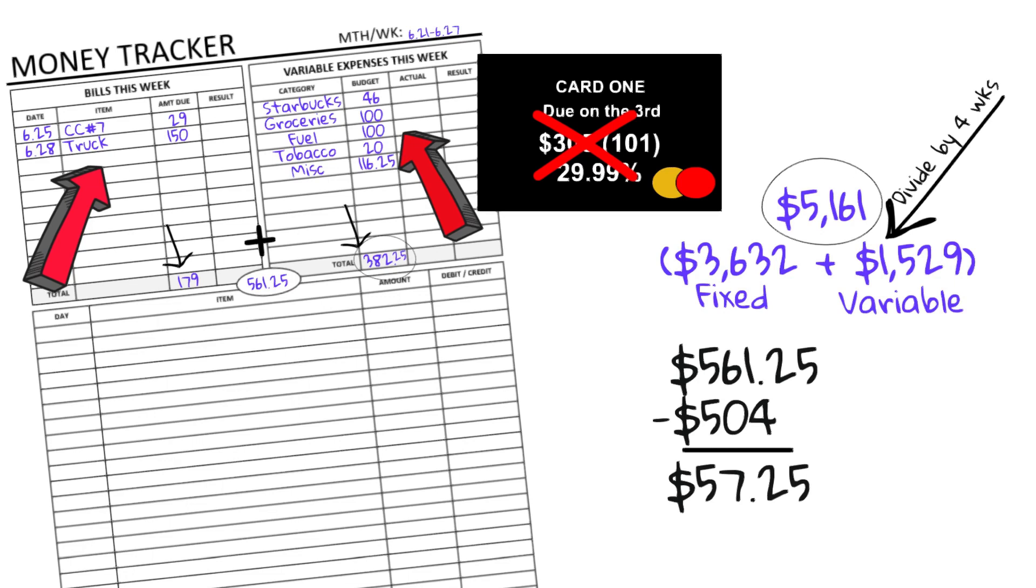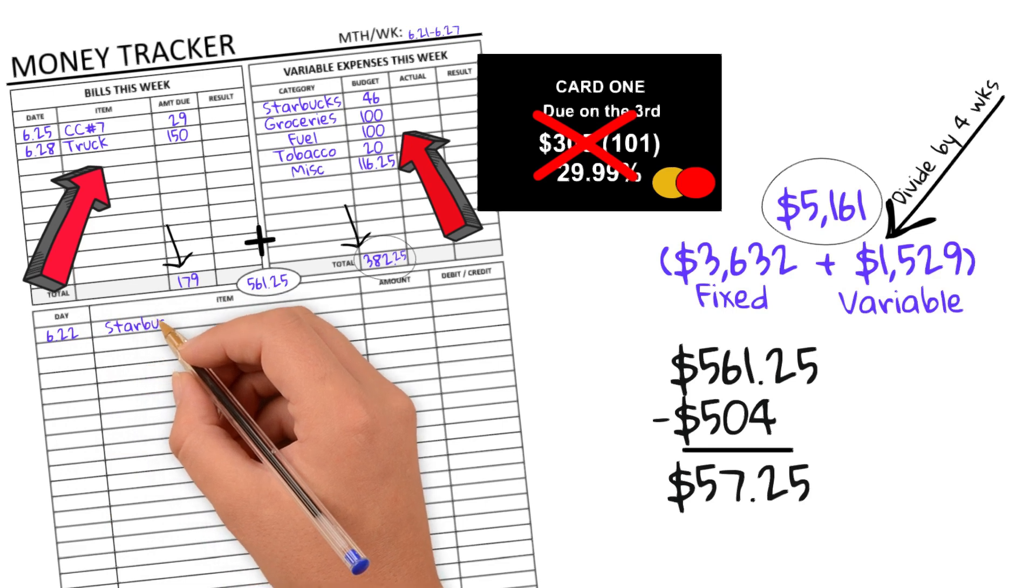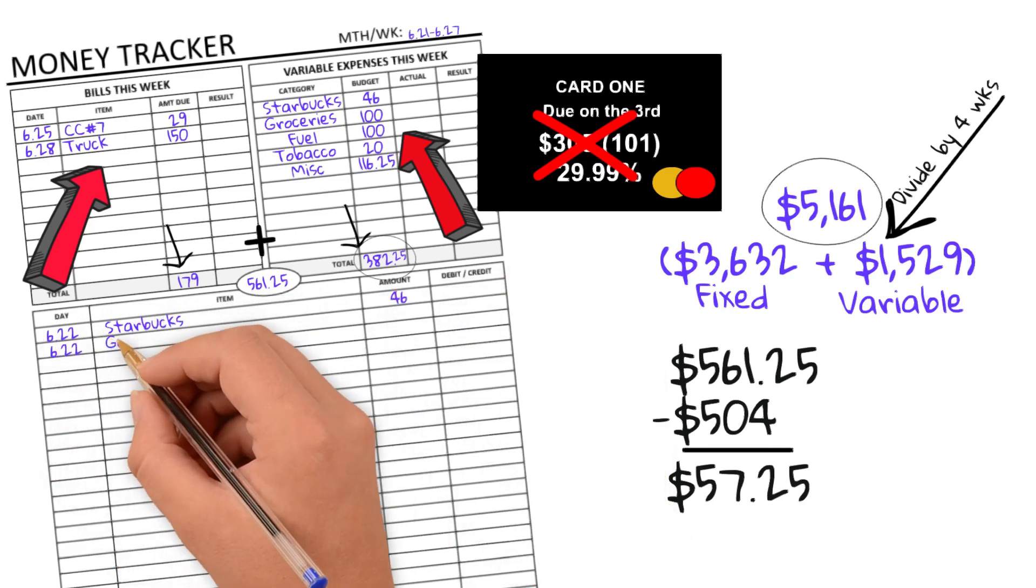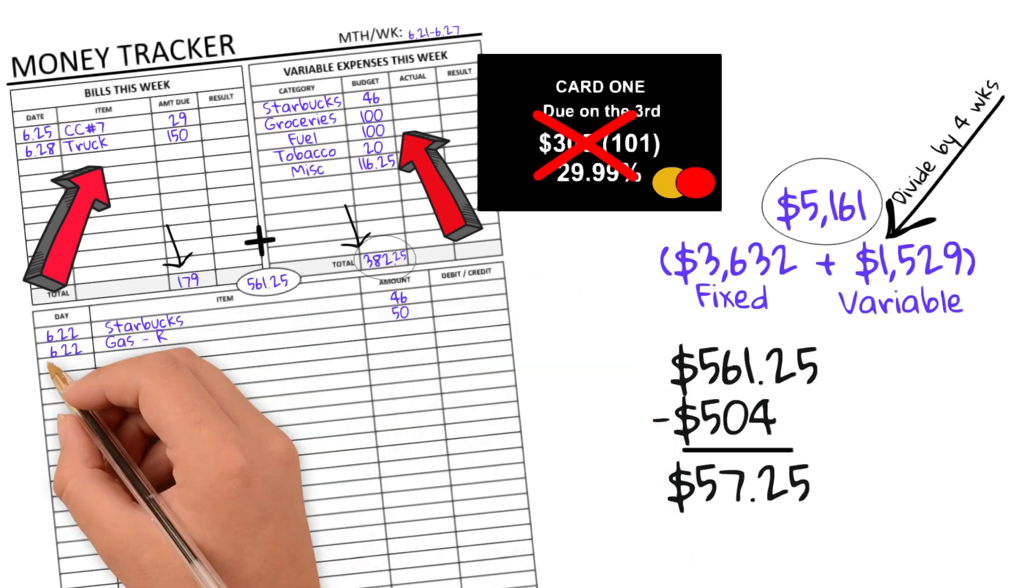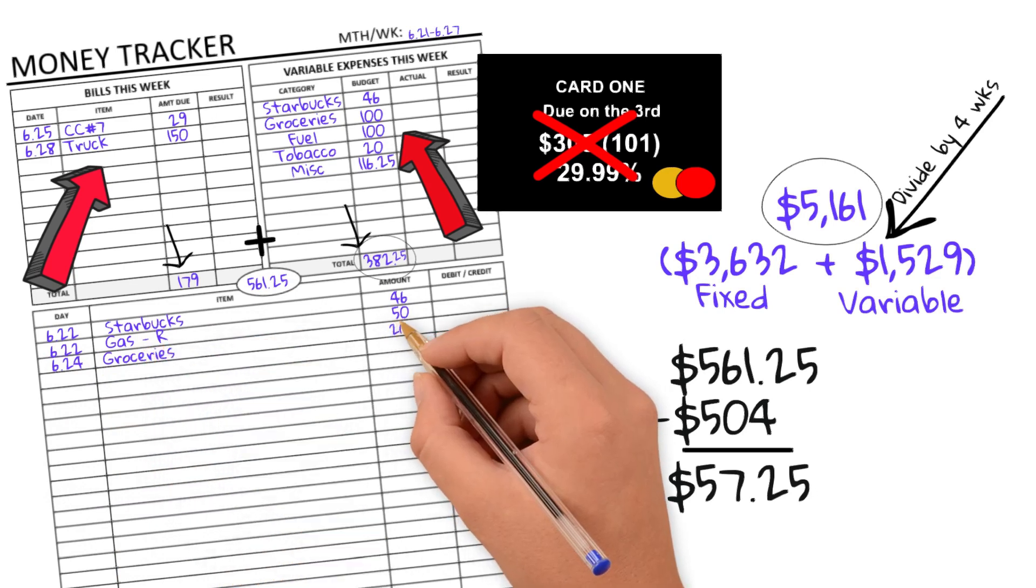So the bottom portion of my money tracker is where I log those variable daily expenses as they happen. If I wait to the end of the week to log it in, I find I overspend every single time. And I do want to explain further how I use this credit card to pay down my debt fast. But I'll do that in my next video.